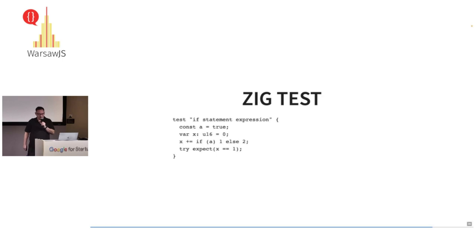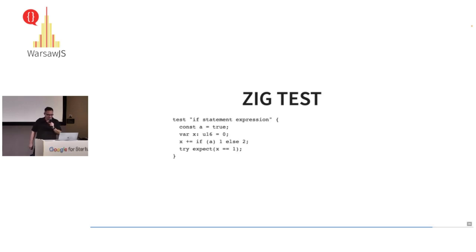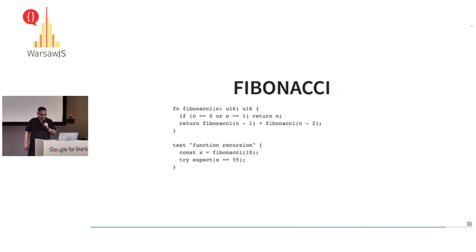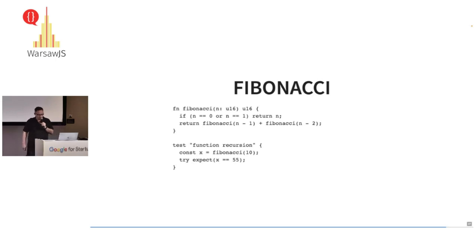Zig has a built-in test runner, so you don't need to install something like Jest. It has quite a nice syntax — you can put tests directly inside your code. Here we can see some example types it supports: u16 is an unsigned integer. The 'if' construct is also an expression rather than just a statement, so it returns a value — you can increment x by either 1 or 2 depending on the value of a. And of course we need to see the Fibonacci sequence. Here we see recursion and tests directly following the function.